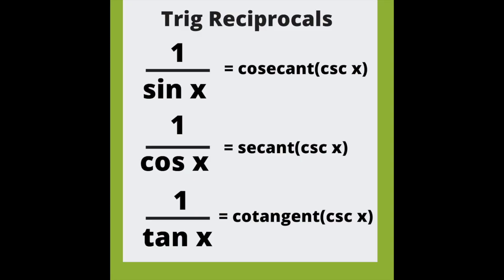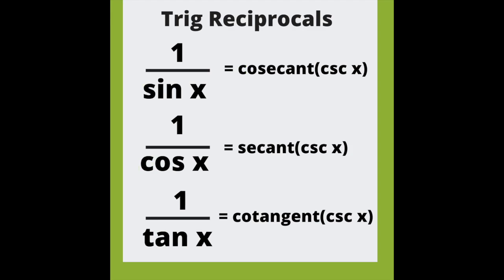When you find the reciprocal, S becomes C and C becomes S. Therefore 1 over sine is cosecant, 1 over cosine is secant, 1 over tan is cotangent.